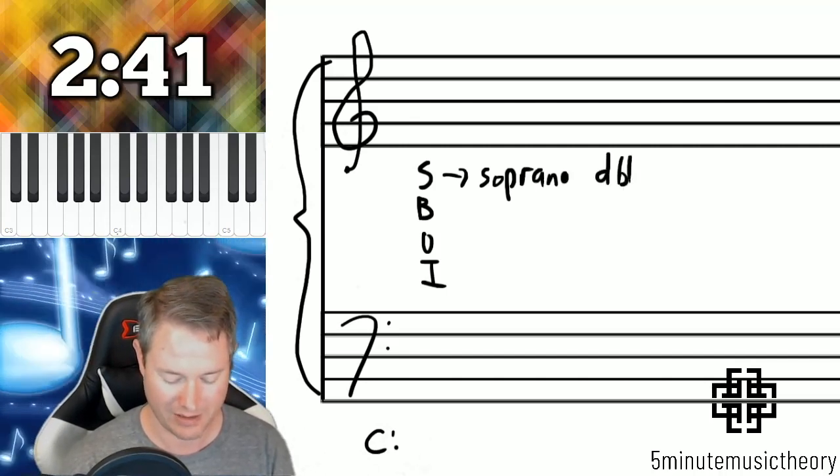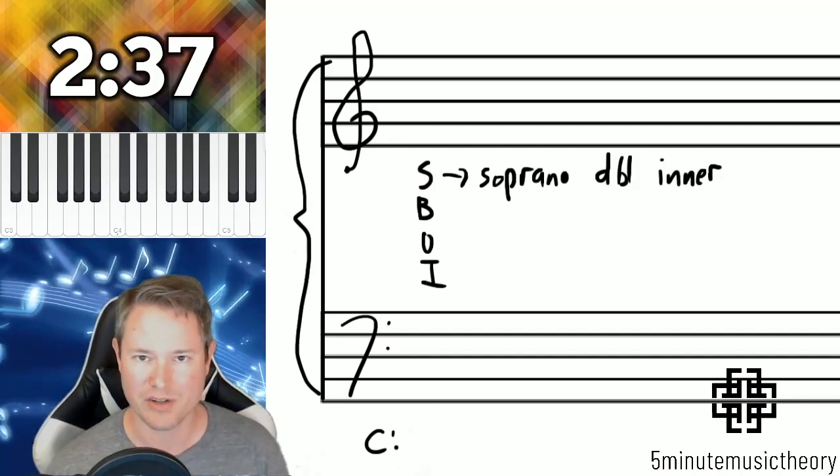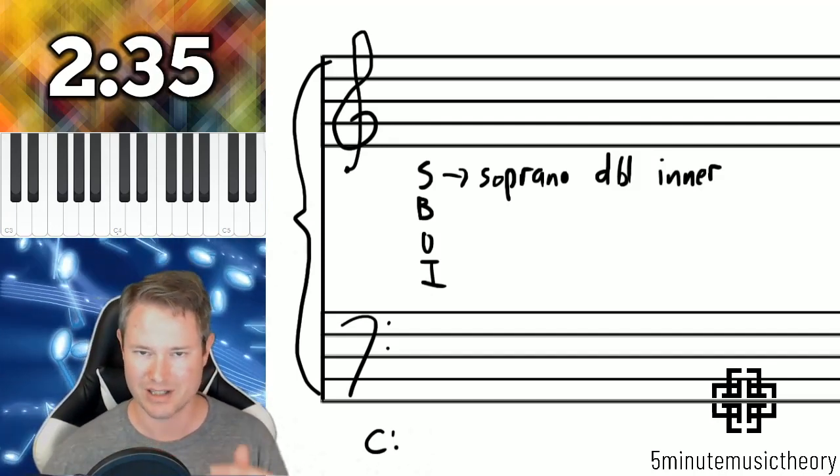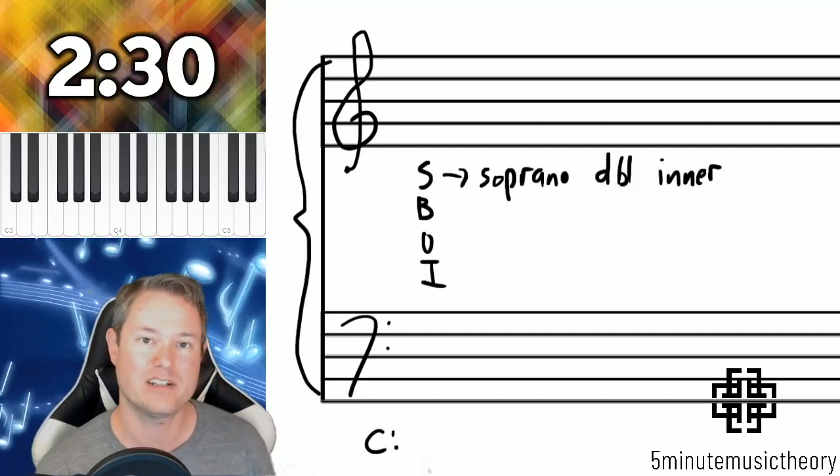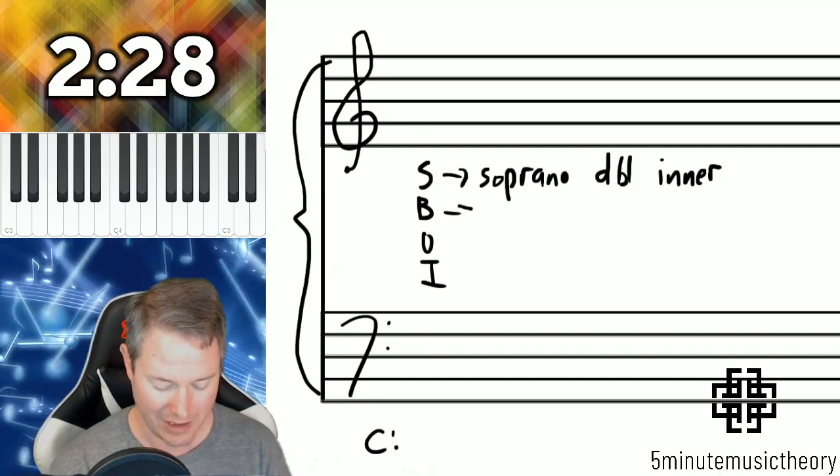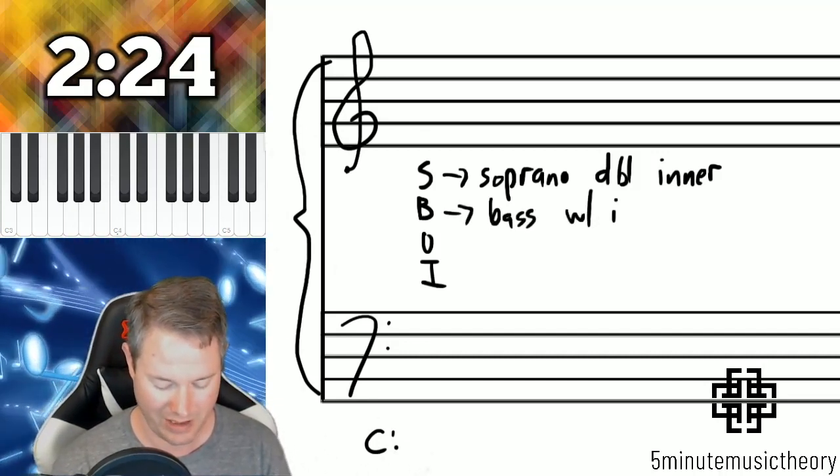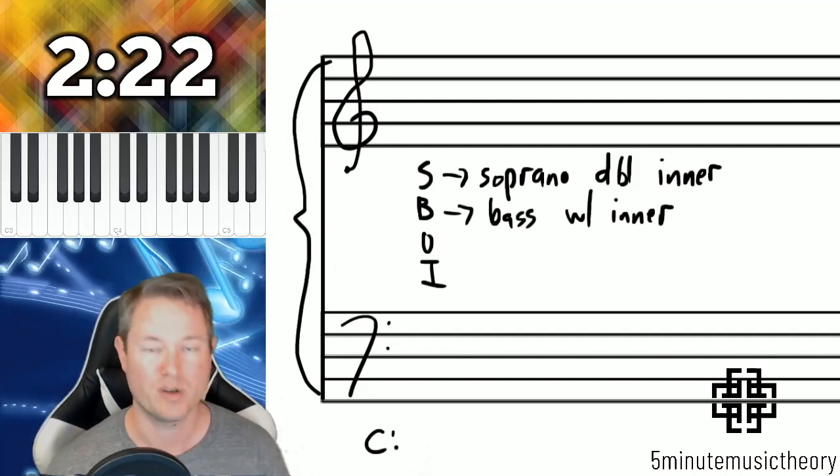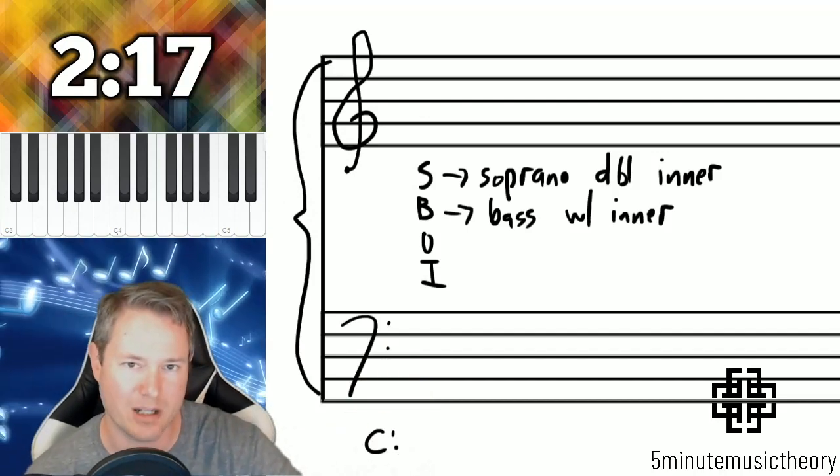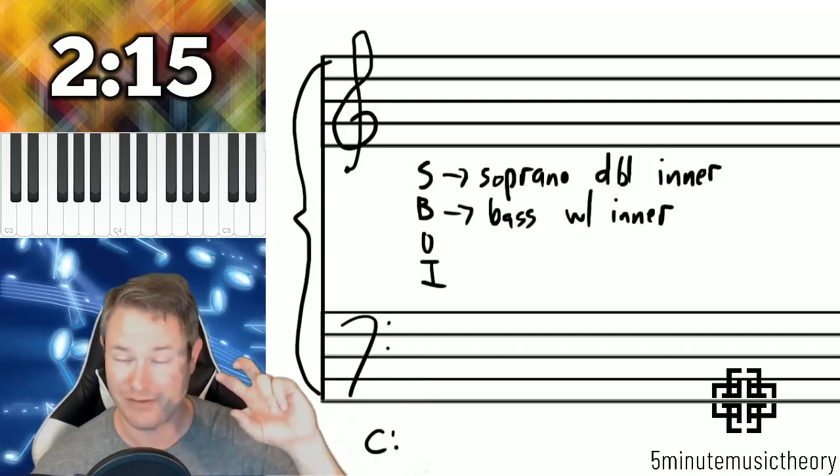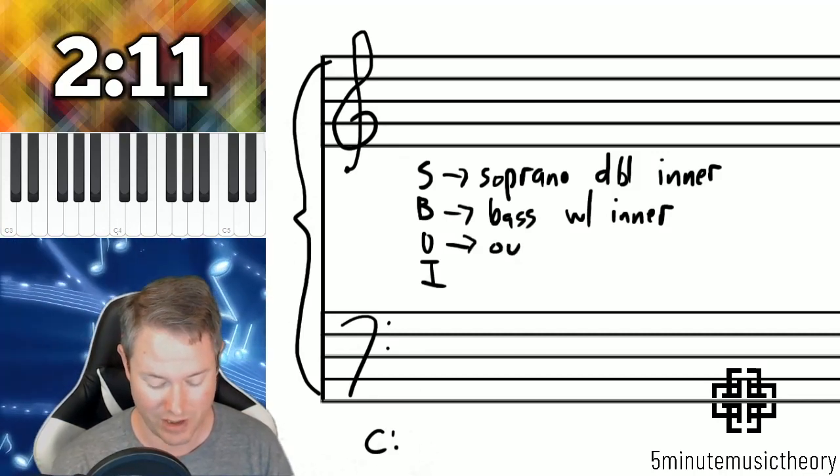B doubles an inner voice, so either the tenor or the alto. It's usually better to double the tenor because if you double the alto that can present some problems, but it's still strong doubling. If you cannot double the soprano with an inner voice, you try to double the bass with an inner voice. So that's our hierarchy. You always approach first inversion triads by starting to try to double the soprano with an inner voice. If you can't, then you try to double the bass with an inner voice.